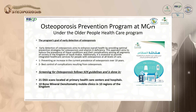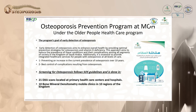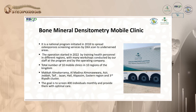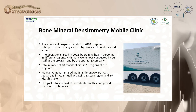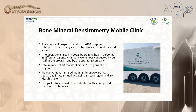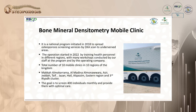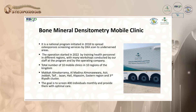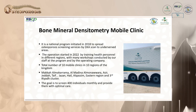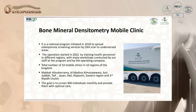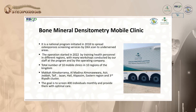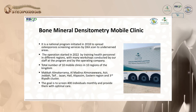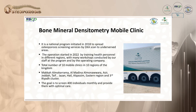We have 10 bone mineral density mobile clinics in 10 regions of the kingdom. This national program was initiated in 2018 to spread osteoporosis screening by DEXA to underserved areas, with operations starting in 2022 through training health personnel with workshops. The 10 mobile clinics cover Mecca, Medina, Asir, Jeddah, Taif, Jizan, Hail, Qasim, Eastern Region, and Riyadh. The goal is to screen 400 individuals monthly and provide them with optimal care.